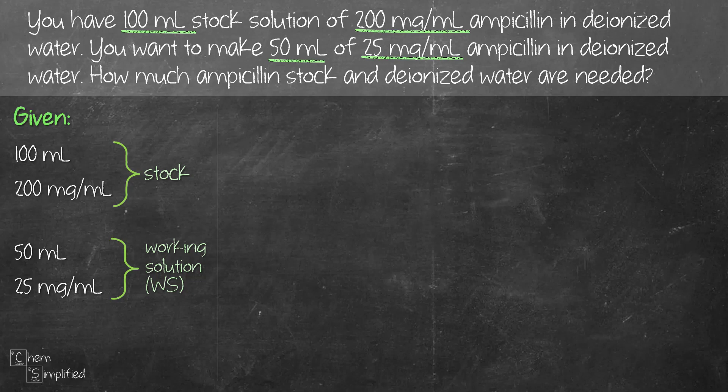Now that we know what we're given, let's look at what we're asked to find. Basically we're asked to figure out how much ampicillin stock and how much deionized water are needed. So we need to find the volume of our stock solution and the volume of deionized water that was added.